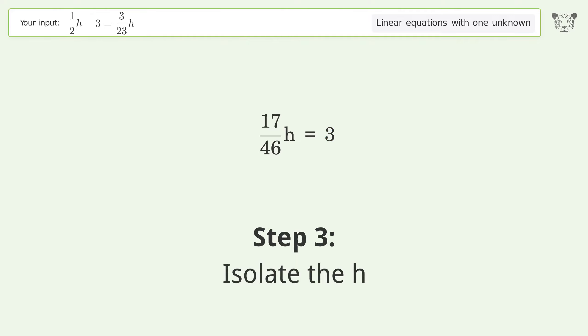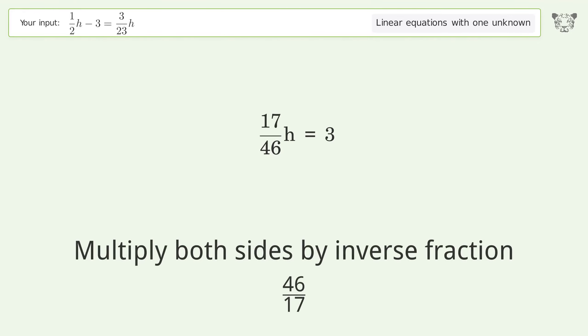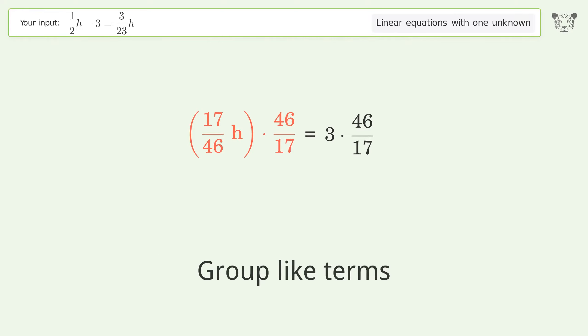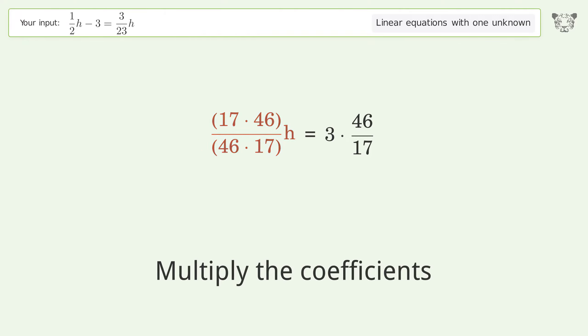Isolate the h. Multiply both sides by inverse fraction 46 over 17. Group like terms. Multiply the coefficients. Simplify the fraction.